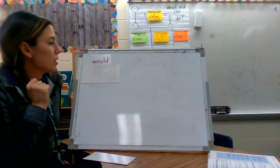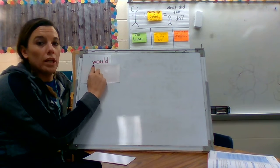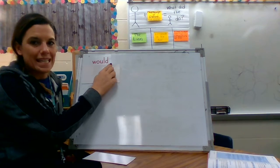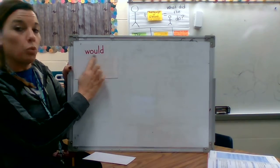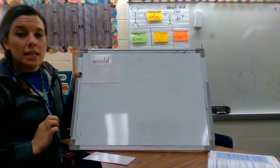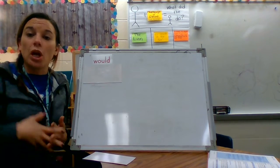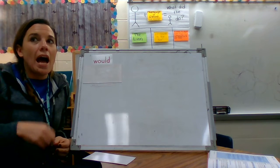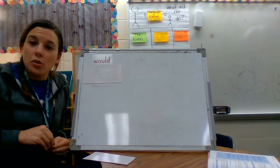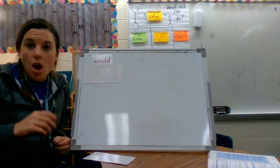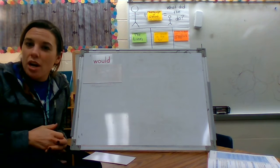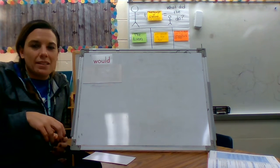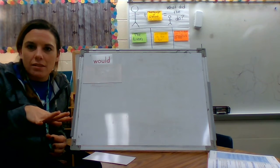Our first trick word today is the word would. W-O-U-L-D. The word would is the past tense of the word will. For example, I might say, I will go to the store soon. But if I want to talk about that in the past tense, so past tense means the time has already passed, okay?